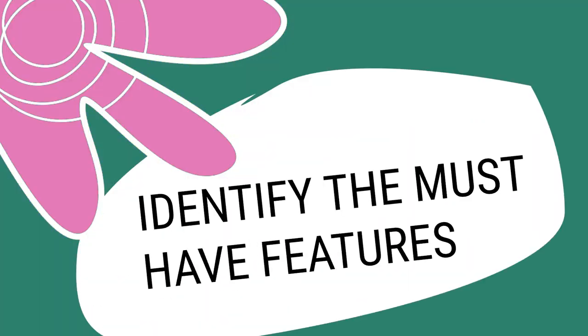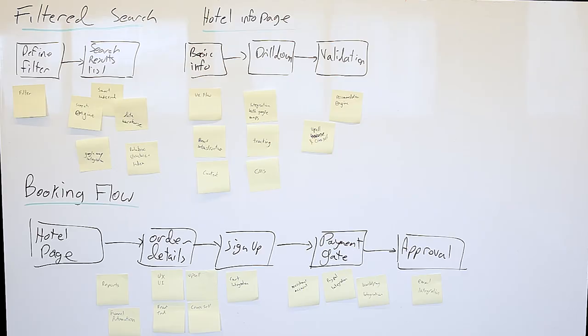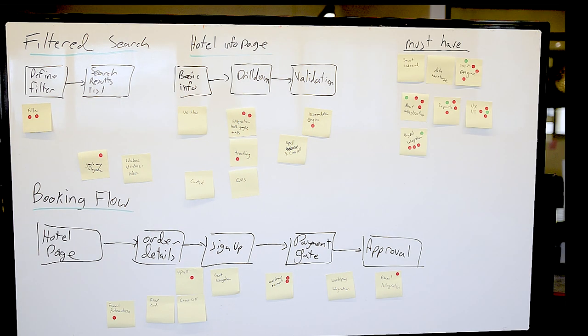Step four: identify the must-have features. These are the basic things you have to enable — features that are central to your product's experience that you are not willing to compromise on in terms of execution quality. Think about Google search, for example: speed is one of the core values of the search engine and was a major differentiator — even the first version had to be fast. Give each team member three to five dots and ask them to vote on the top three to five tasks that are must-haves. Then have the decider select the must-haves and move them under a list titled must-haves.